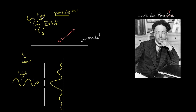Louis de Broglie said: what about the electron? He said, if light, which we thought was a wave, can act like a particle, maybe electrons, which we thought were particles, can act like a wave. In other words, maybe they have a wavelength associated with them. He was trying to synthesize these ideas into one overarching framework in which you could describe both quanta of light and particles — which we thought were just particles — but maybe they can behave like waves as well. Maybe everything in the universe can behave like a particle or a wave depending on the experiment being conducted.